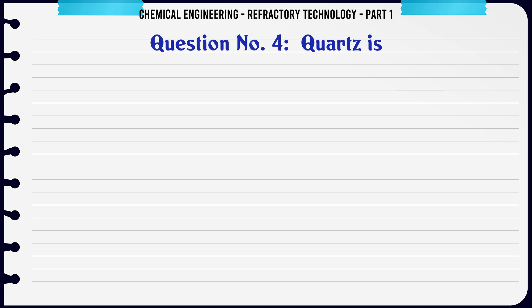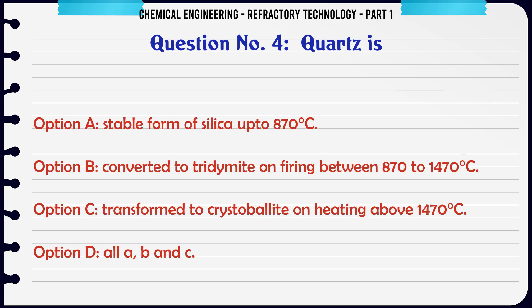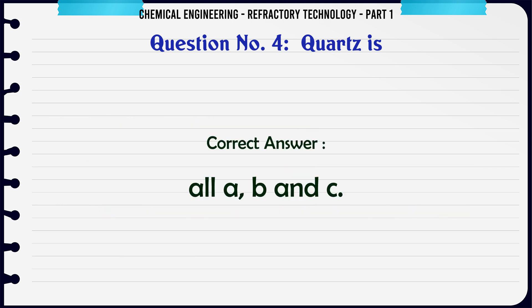Quartz is: A. Stable form of silica up to 870°C, B. Converted to tridymite on firing between 870 to 1470°C, C. Transformed to cristobalite on heating above 1470°C, D. All A, B and C. The correct answer is All A, B and C.